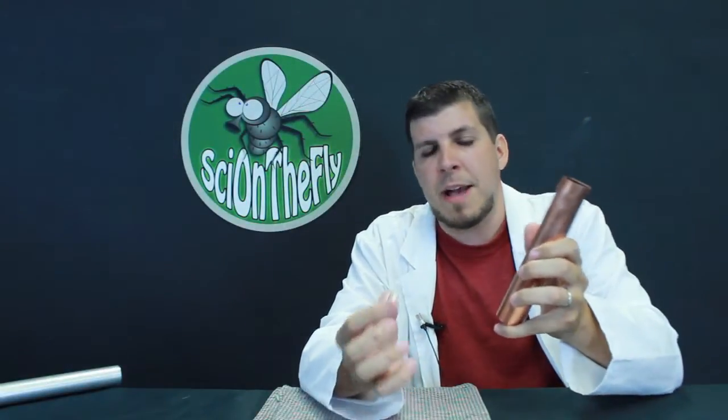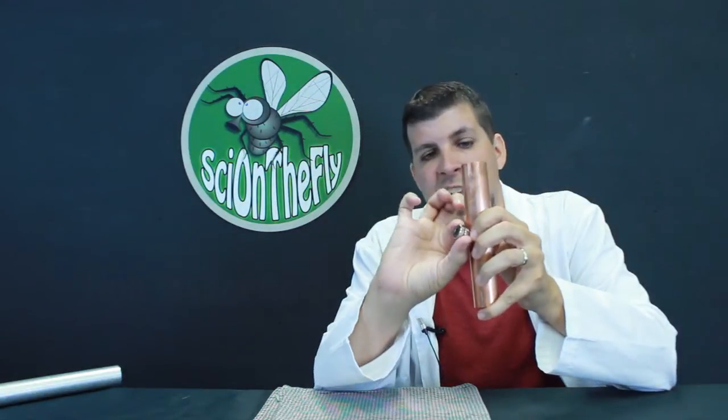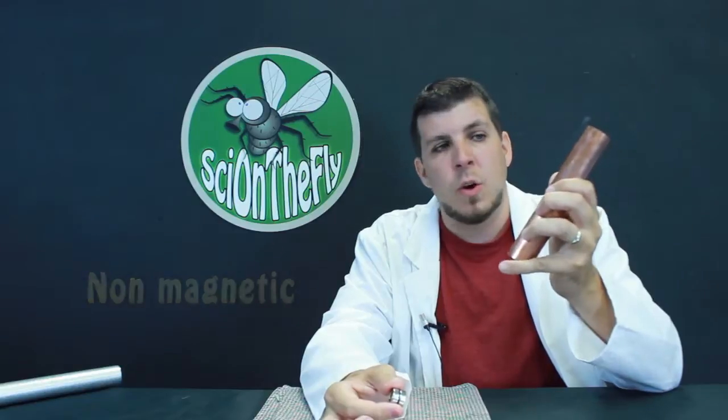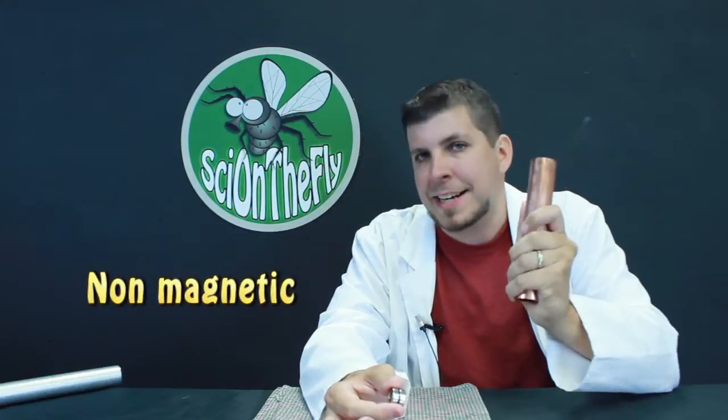Now this copper tube is an example of the type of metal that does not attract magnets. The magnet does not want to stick to the side of this copper tube at all. We say that copper is non-magnetic.